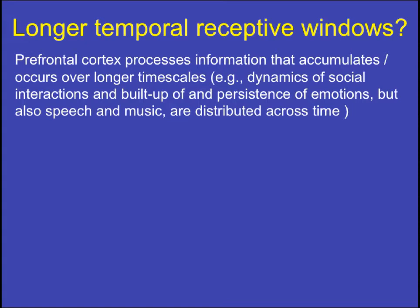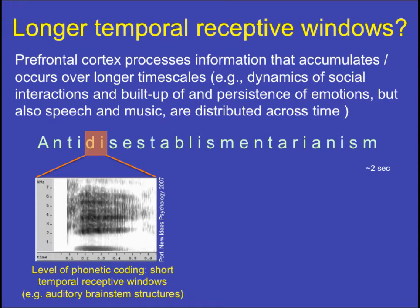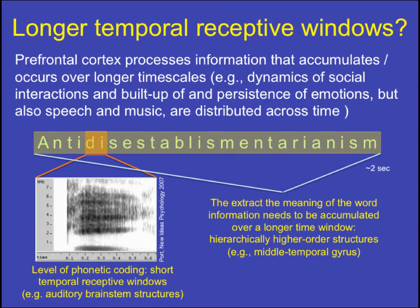As a simple example, the word 'antidisestablishmentarianism' lasts about two seconds. At the phonetic coding level, you need very short temporal receptive windows to react to individual phonemes. But if neurons were only sensitive to those, you wouldn't be able to understand language — you need to accumulate information across the full two seconds to get the meaning of the word.